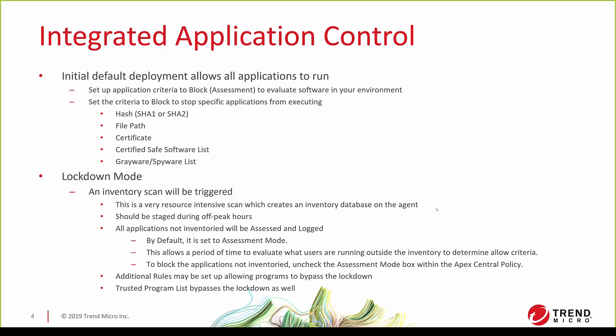When you're setting up the application control criteria within the Apex Central policy and you want to get it out of assessment mode, all you do is change it from block and assessment — there's a checkbox — and it will stop that specific application from executing. You can enter a whole bunch of different criteria to block that application, whether it be a hash, a path, certificate details. There is a huge certified safe software list you can select from, and a grayware spyware list. You can set those to block and it'll block them once you assign that criteria to the rule within the policy.